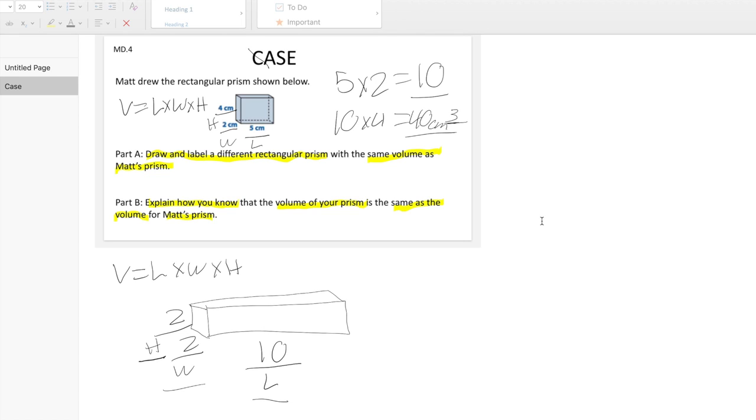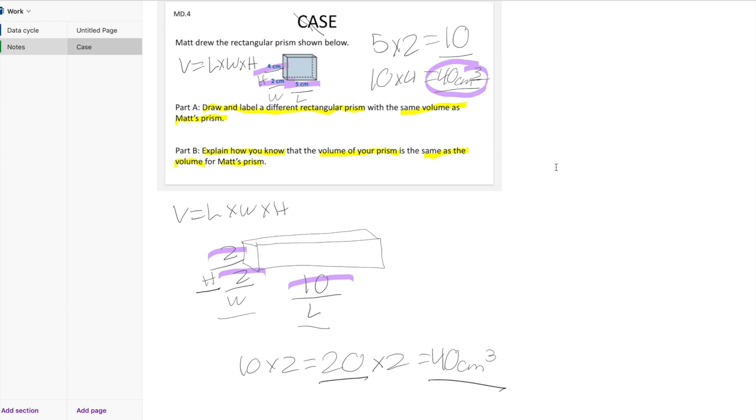As you can see, I have annotated Matt's model and my model, so I can cross out the A in CASE. I also solved the equation for Matt's prism, which was 40 cm cubed, and I also solved the equation for my prism, which was 40 cm cubed. I can cross off the S.